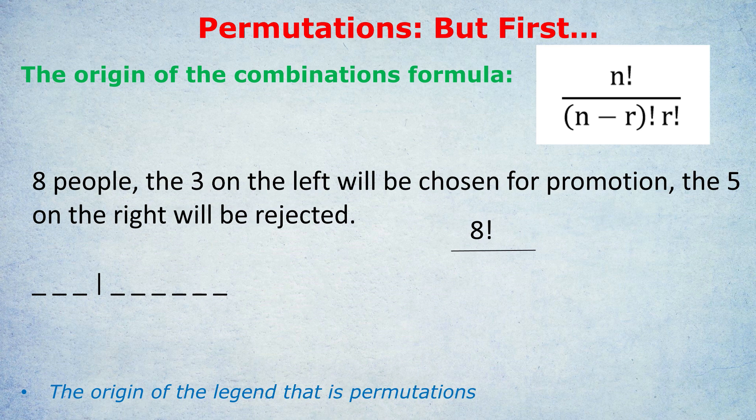So how do we reflect that in the formula to account for all that double counting and overcounting? Well, we divide by, in this case, three factorial. And that accounts for all the duplications of those three people rearranged while being promoted. And that's our R. The R is the number of people we're selecting, in this case three, and that's why we divide by R factorial, to get rid of those duplications among the people being selected.